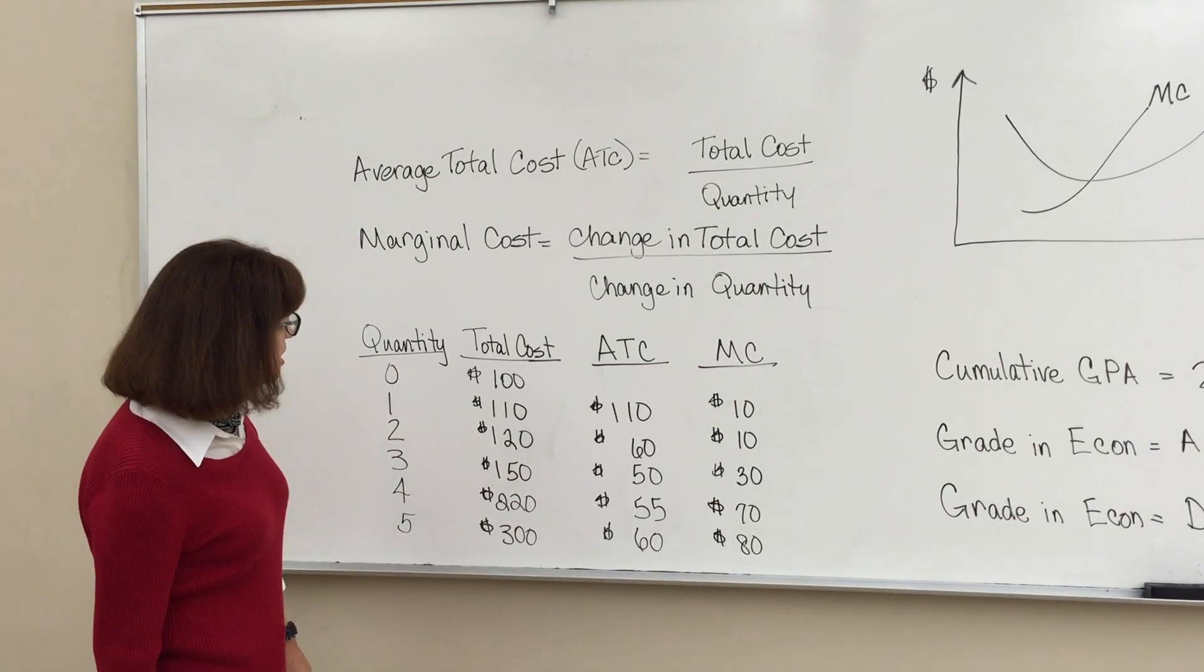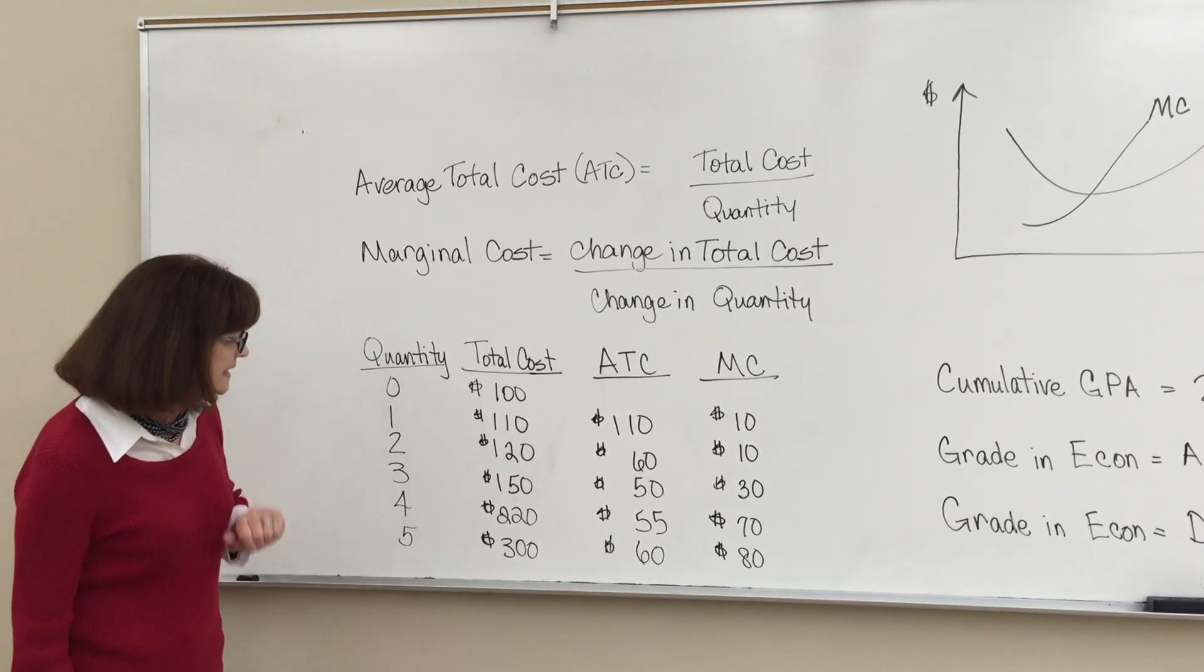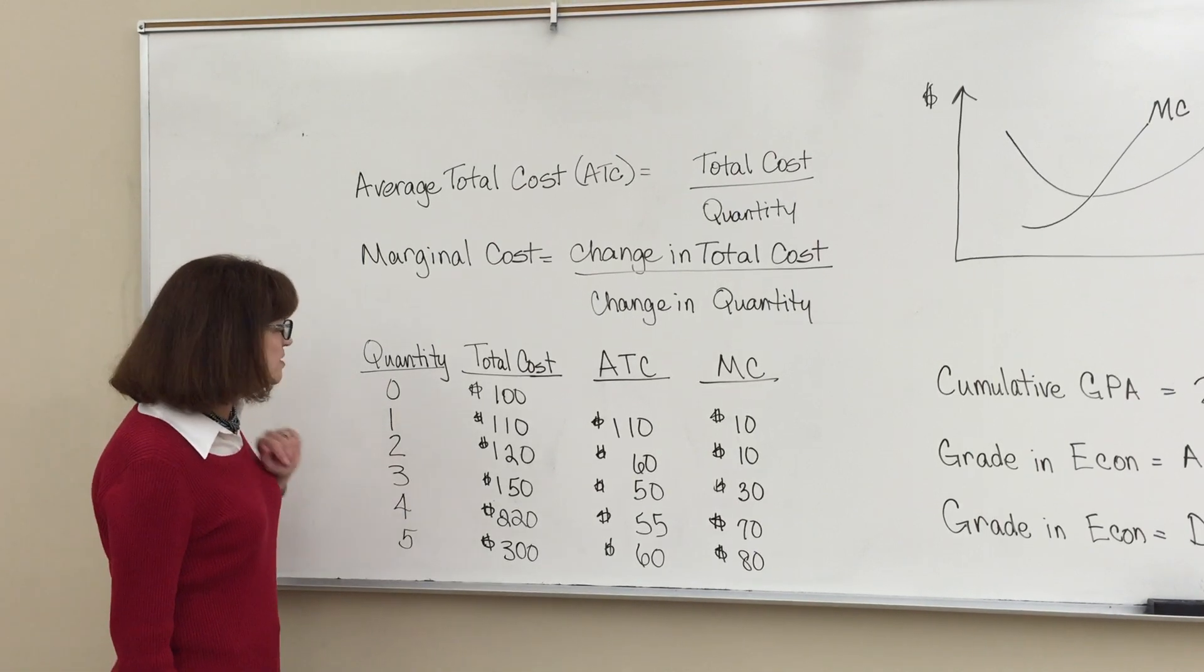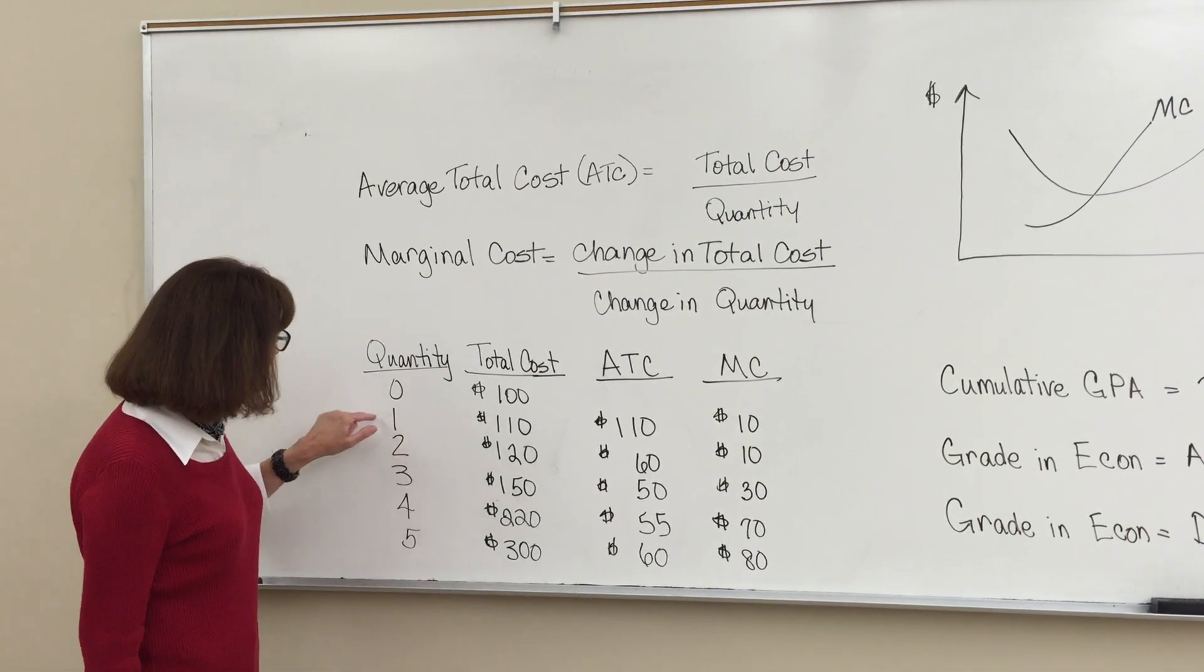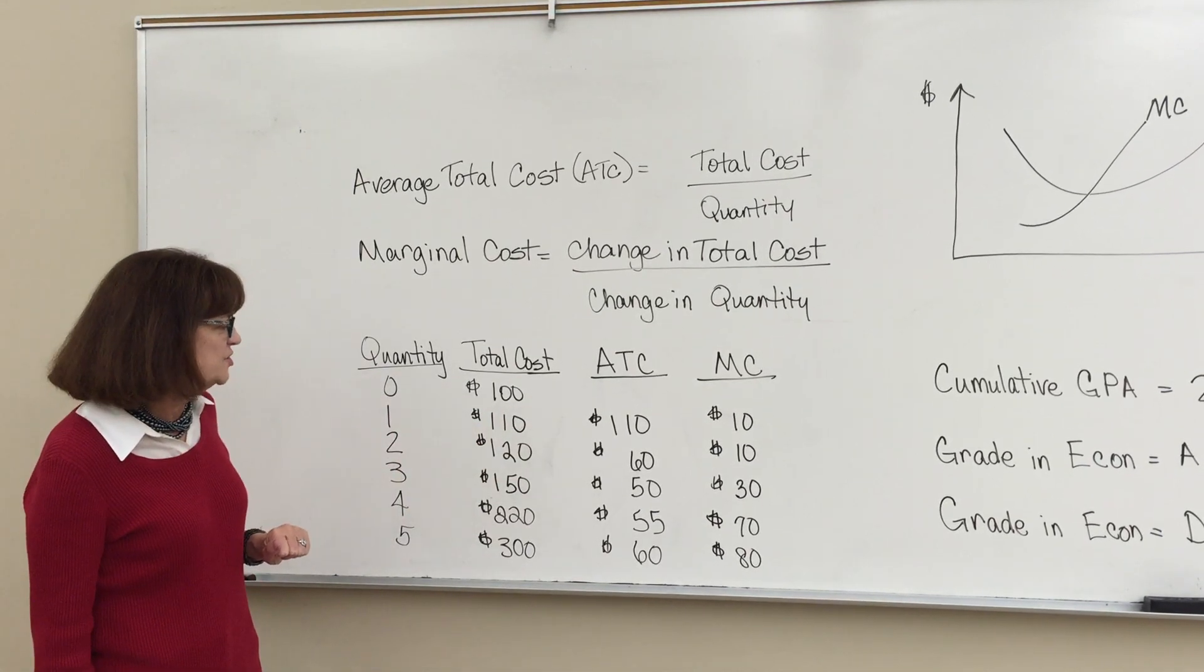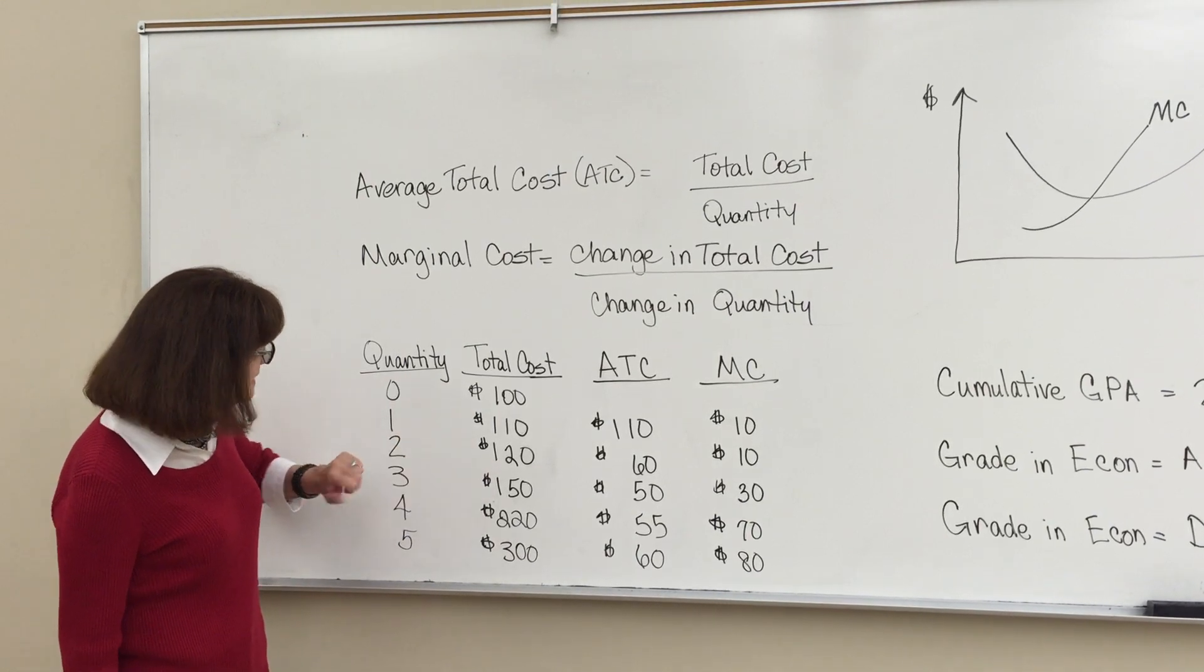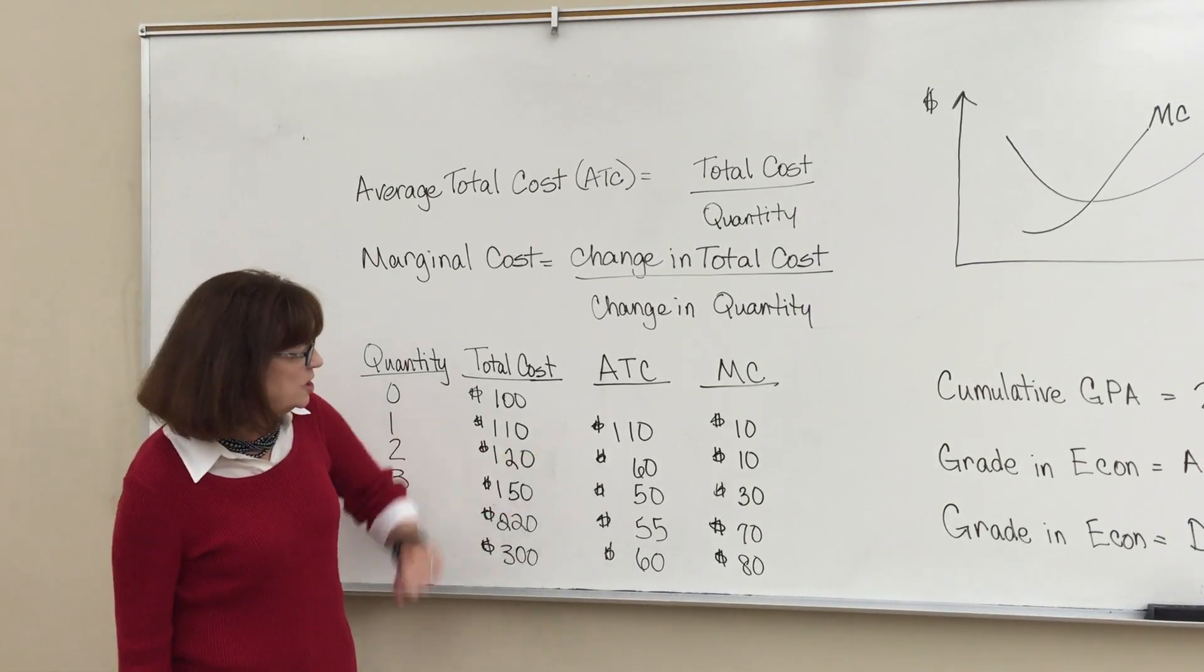Your average total cost is simply your total cost divided by your quantity. So when you produce one unit of output, your total cost is $110. You divide that by one, your average total cost is 110. A total cost for two units of $120 means your average total cost is 60.